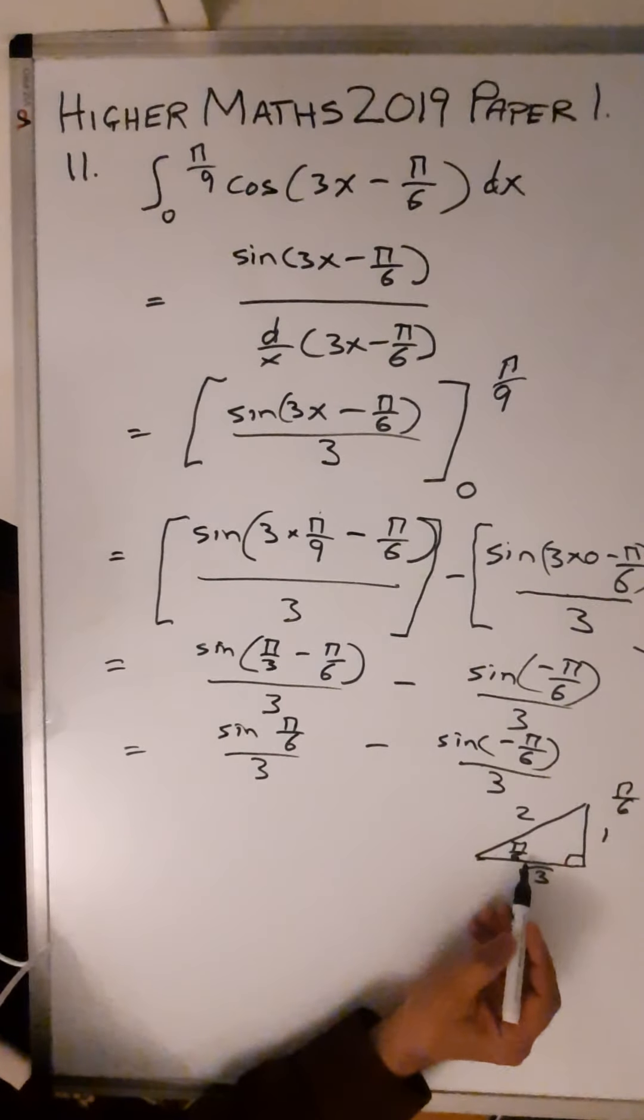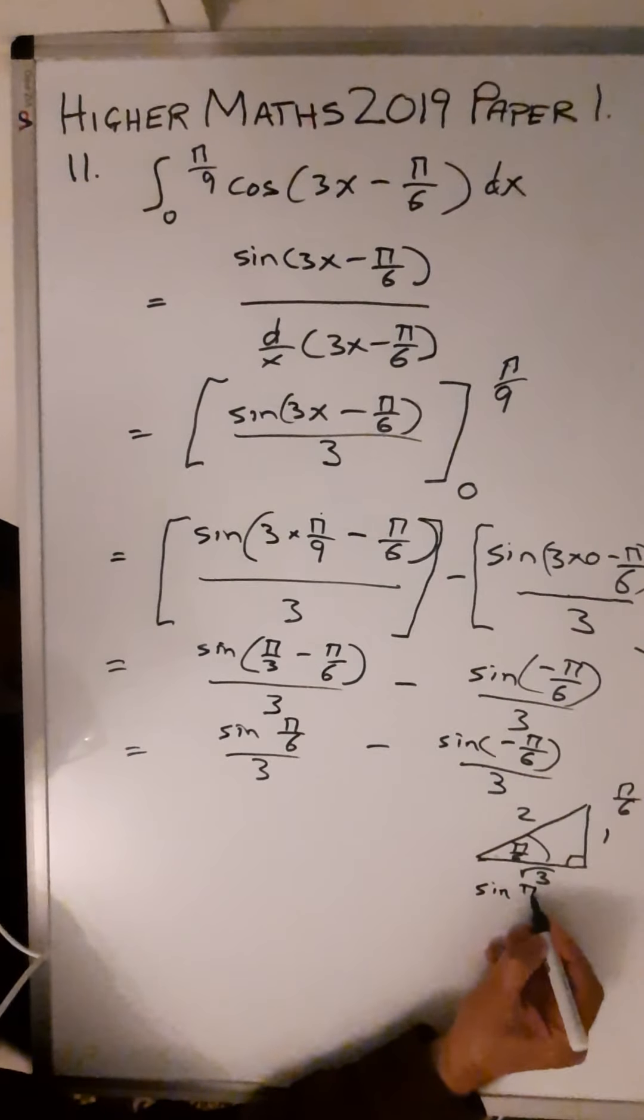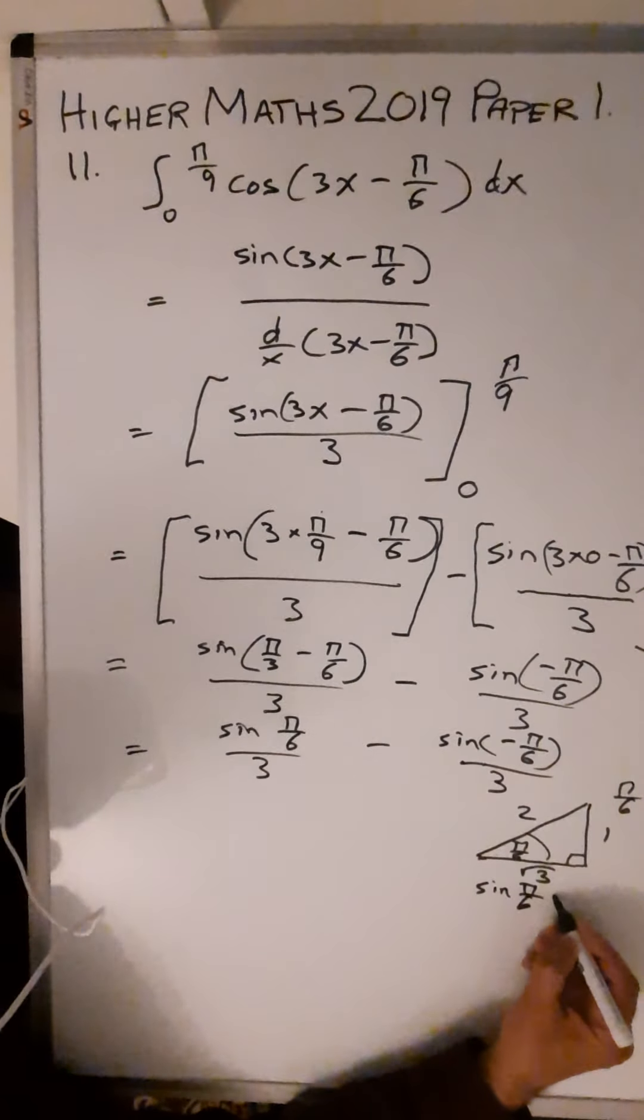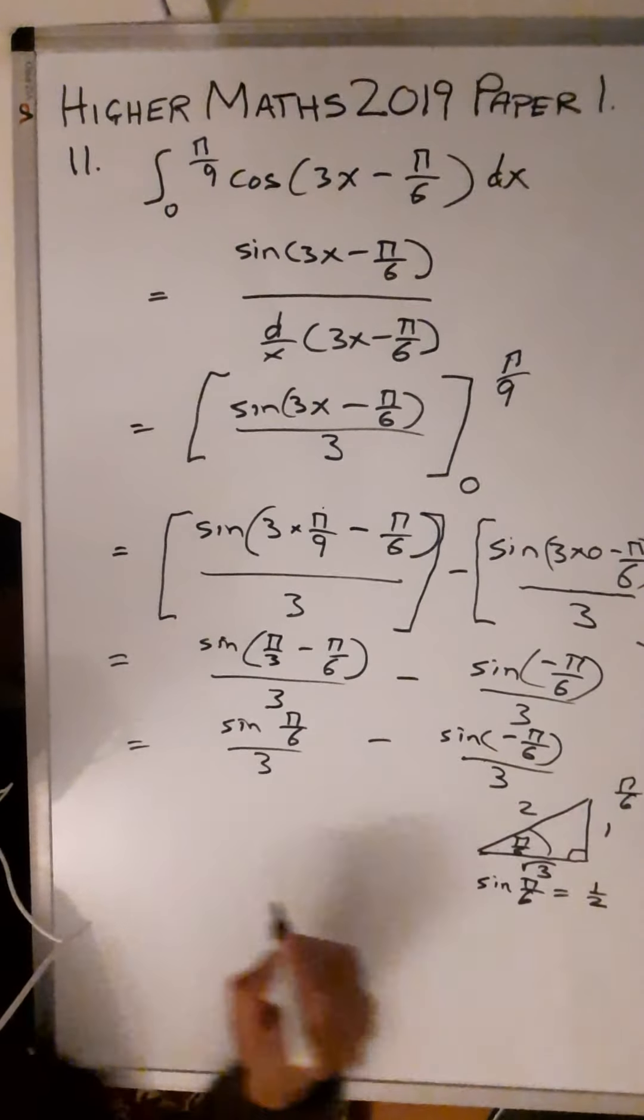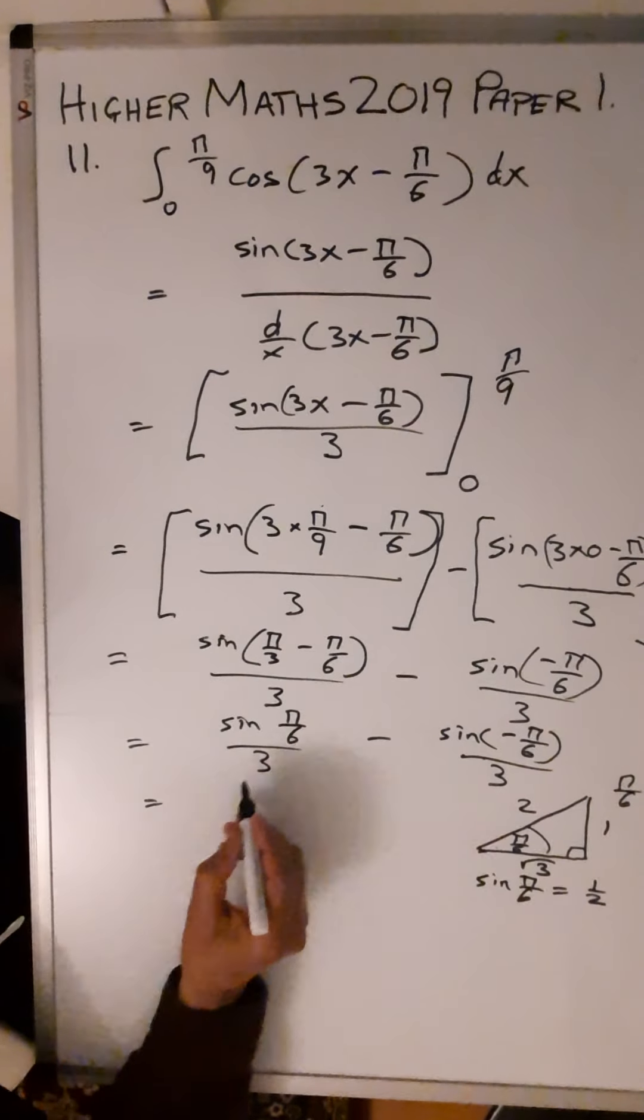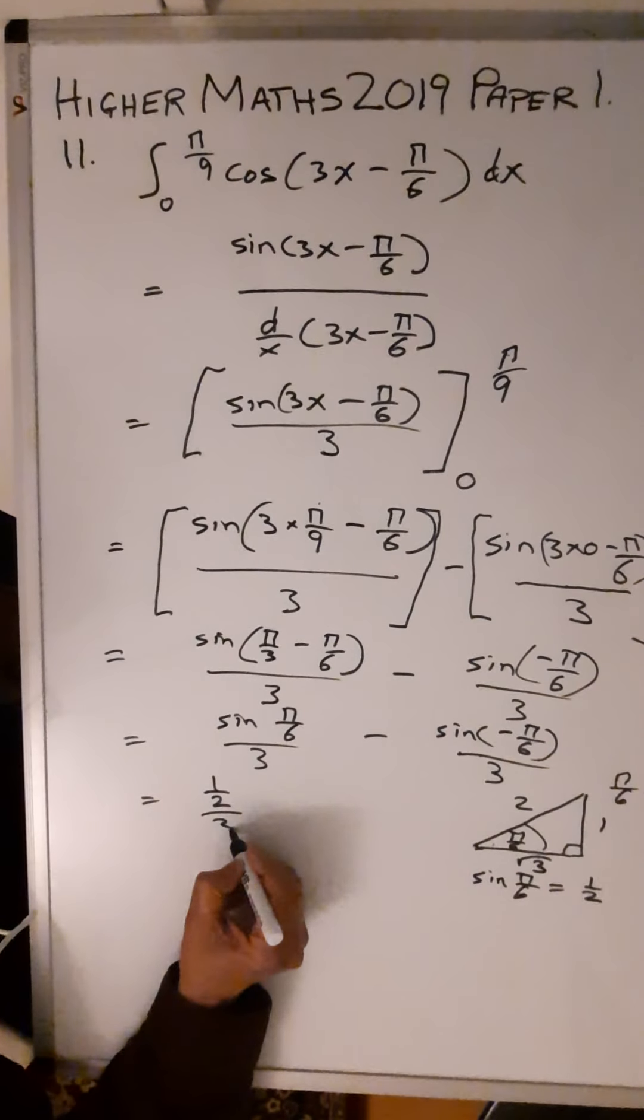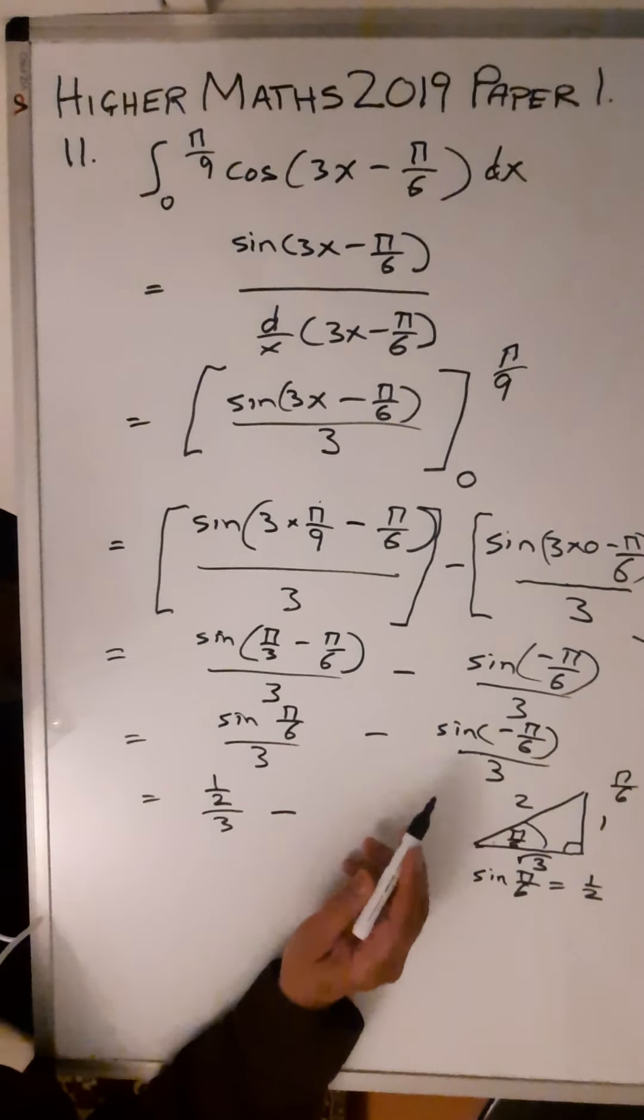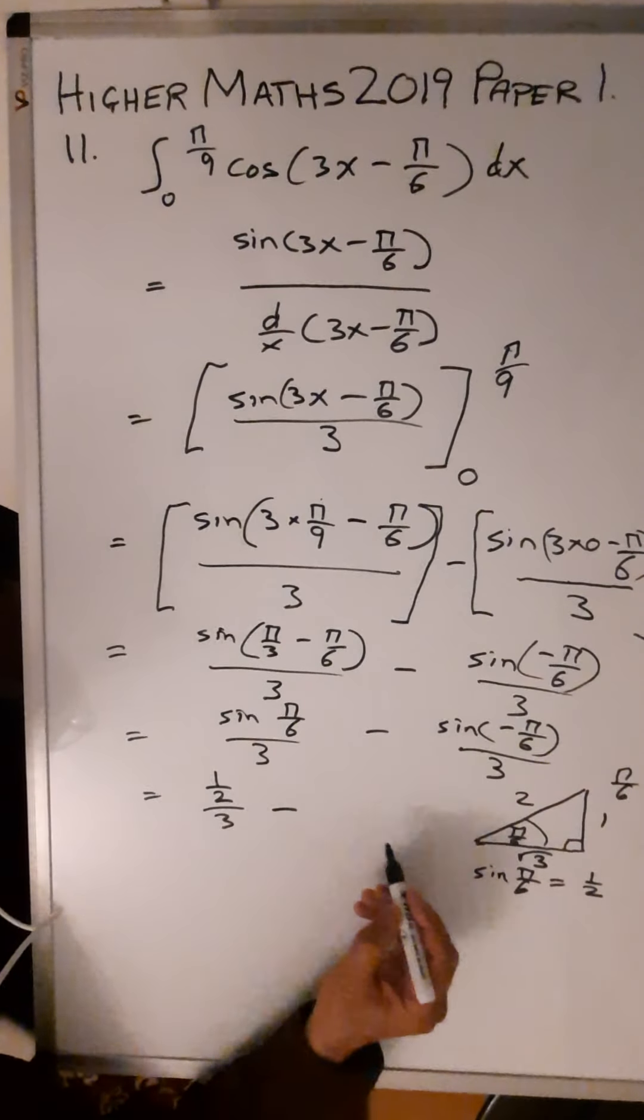You can replace this, so sin(π/6) equals 1/2. So you can replace the sin(π/6) in the numerator here by 1/2 divided by 3 minus sin(-π/6).